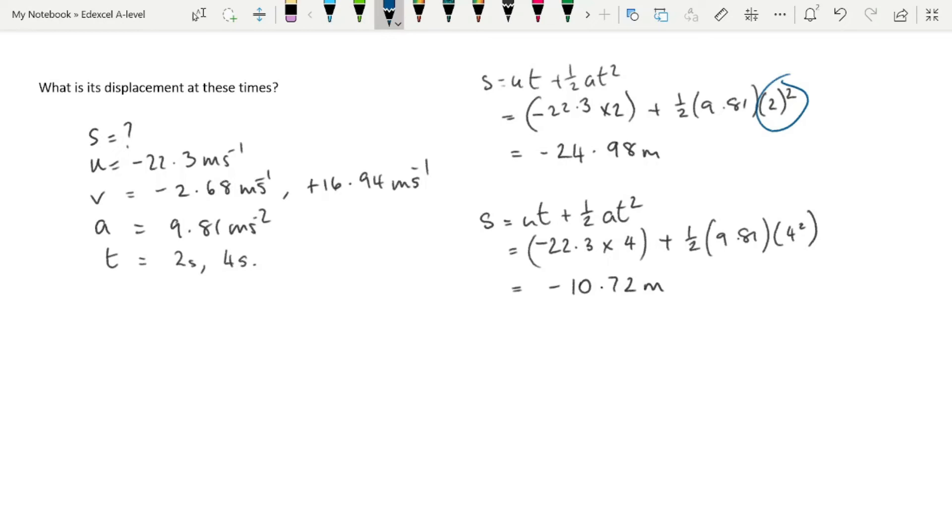Remember, that minus means it's a displacement upwards. Because we're talking about vector quantities and we've said positive is downwards, any negative is upwards. So the ball travels up, and in 2 seconds it's almost 25 meters from the hand.